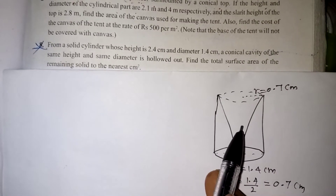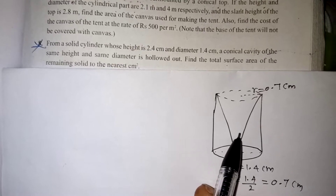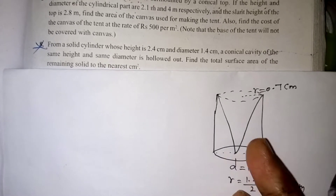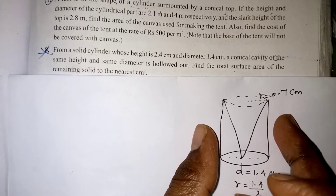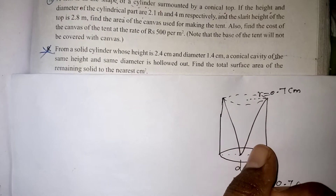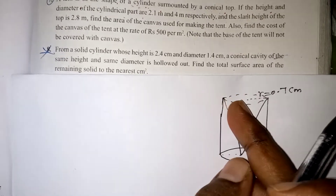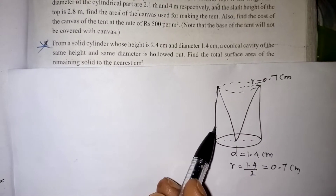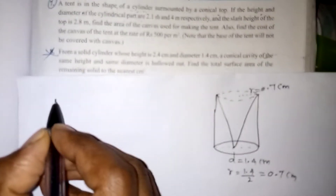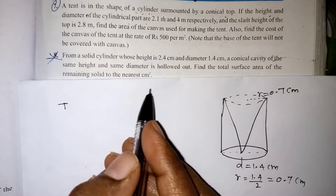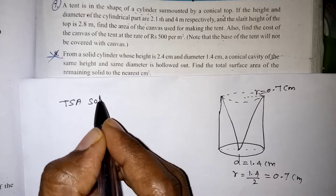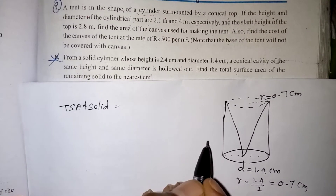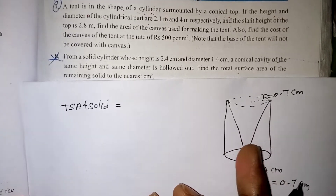So what is the total surface area of the remaining solid? After taking this cone outside, which parts will be visible — that is the remaining surface area. After removing the cone, the outer part of the cylinder will be available, which is the curved surface area (CSA) of the cylinder.